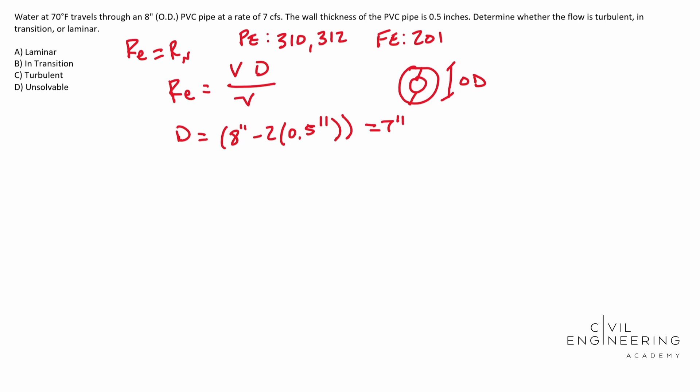Okay so for your kinematic viscosity this guy is going to be actually in a chart. So you're going to have to find the 70 degree Fahrenheit water temp and look under the column that it has for kinematic viscosity. And you end up with 1.059 times 10 to the negative 5. And this is feet squared per second.